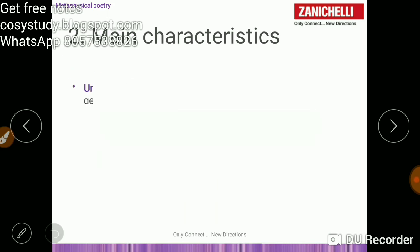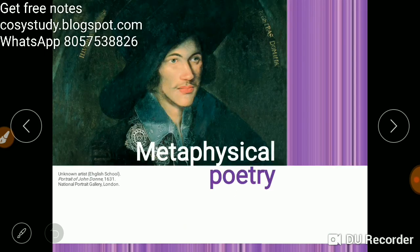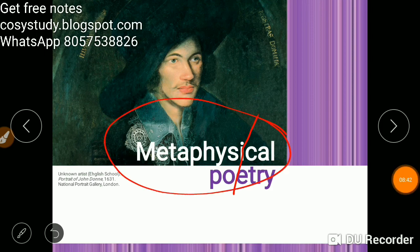We have finished. You can see paradox, unusual images. Take out at least four: conceit, paradox, unusual images. You can see, here the metaphysical poetry. Let's go ahead once more, a quick revision of what we have studied right now.